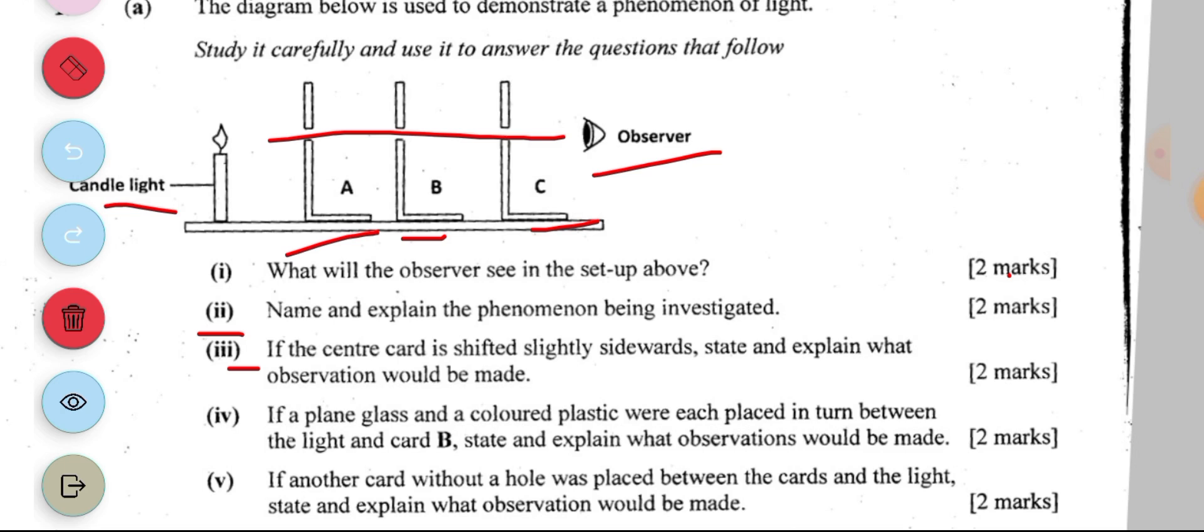If a plain glass and a colored plastic were placed in turn between the light and card B, state and explain what observations will be made. Let's break the question down. A plain glass and a colored plastic were placed in turn between the light and B. Here is what will be the observation.